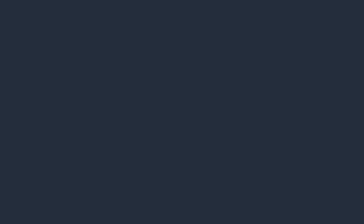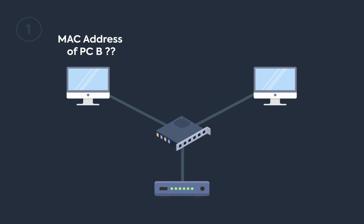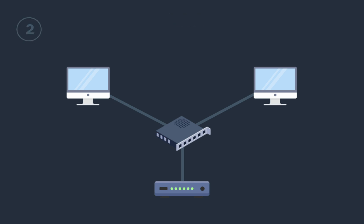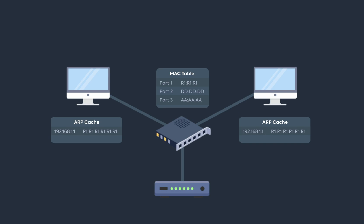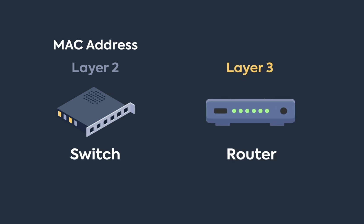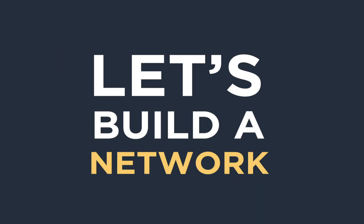Before we start, you should know a few things. First, if a device on the network doesn't know the MAC address of another device, it sends out an ARP broadcast to find it. Second, each device has its own ARP cache, which stores IP addresses with their corresponding MAC addresses. Third, a switch is a layer 2 device that forwards packets based on MAC address, not IP address. Finally, a router is a layer 3 device that forwards packets based on IP address, but it can also perform layer 2 functionality.